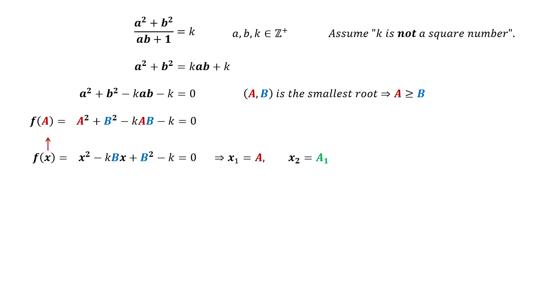For roots A and A1, we can write X minus A times X minus A1 equals 0. Expand the brackets, and we can compare the coefficient of each term. Then we get A plus A1 equal KB, and A times A1 equal B square minus K.